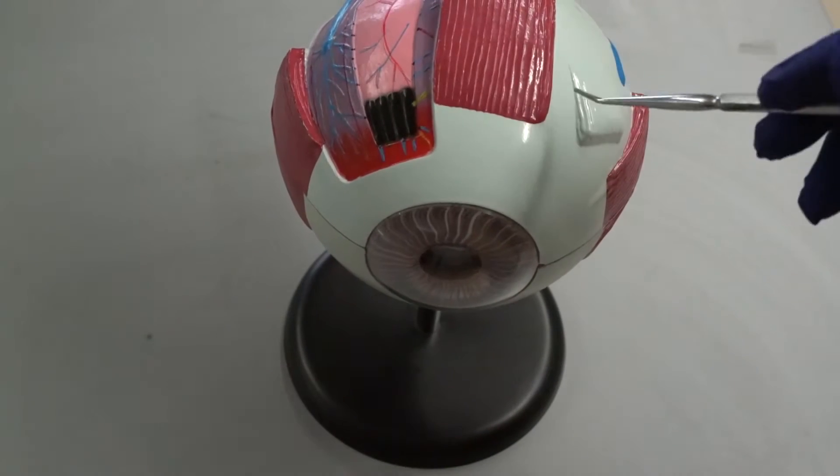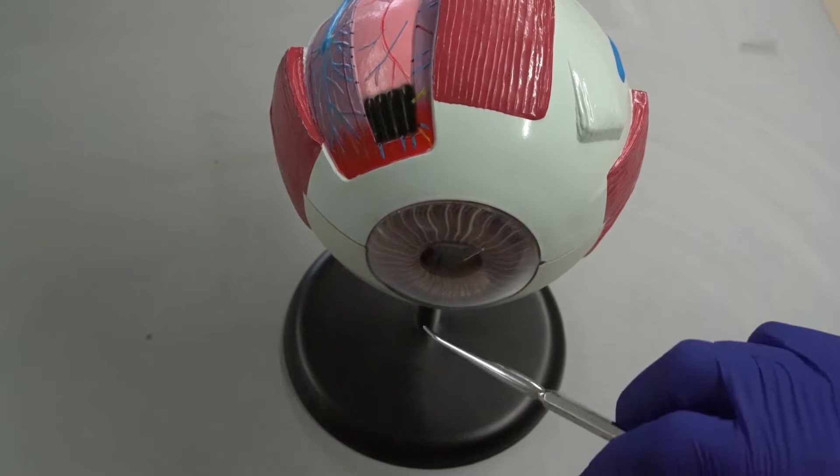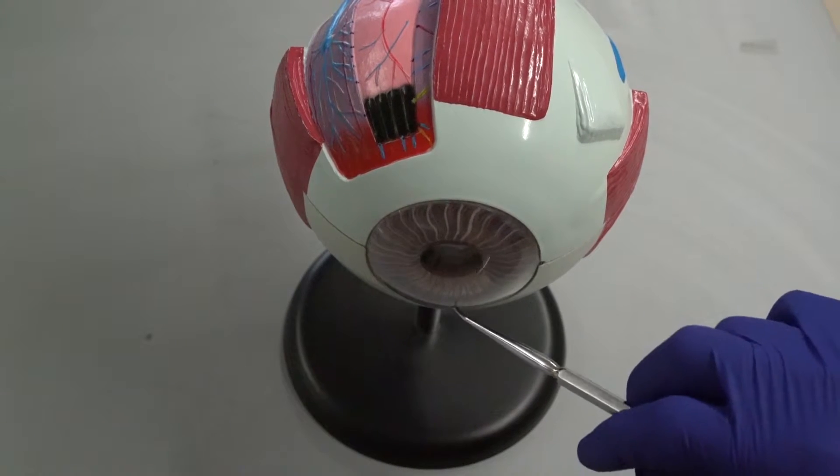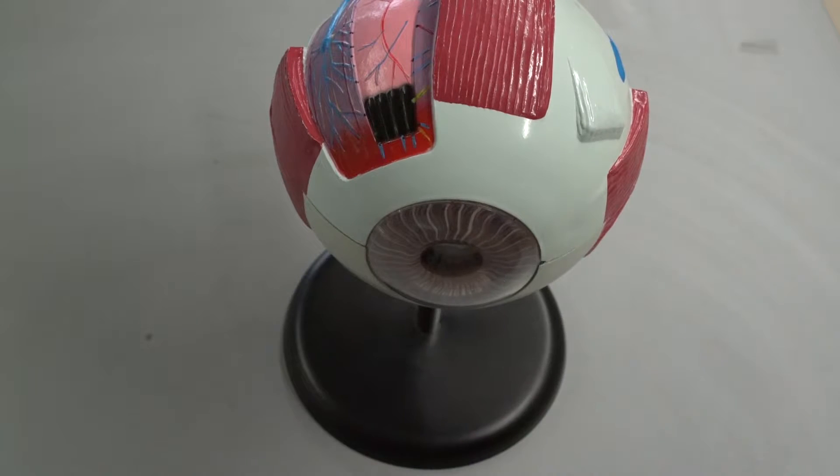And then if you follow the sclera to here, this is an extension of the sclera. This is called your cornea, and it doesn't have a color. This is what's going to allow light to pass through into your eye.